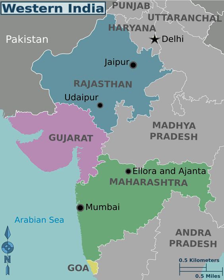The region generates 24% of the national GDP of the country, with an annual growth rate of 14.5% as of 2006. The states generate about 23% of the tax revenues of the country. More than 85% of households have access to electricity, with about 55% owning a television. Agriculture employs most people in the region, while services have the largest share in the total GDP.